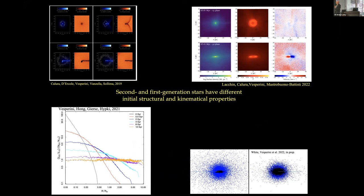These are simulations of different generations of clusters living in the same stellar systems. These 2019 hydrodynamical simulations model the formation of the second generation of stars inside a pre-existing first generation system. The two generations have very different structural and kinematic properties. We are studying many questions: how long does it take for the two generations to acquire the same spatial distribution, how long kinematic differences are preserved, and how long it takes for internal dynamical processes to erase those differences.